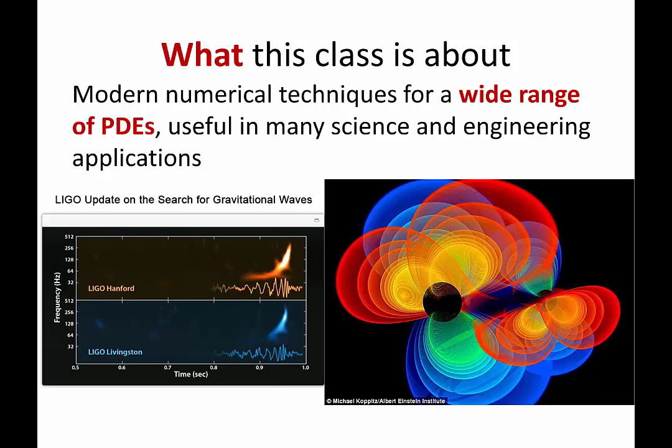This is amazing to me because when people were simulating this, they didn't even know it actually existed — that was before the observation. In some sense, it was a prediction by purely physical, mathematical, and numerical deduction. And then last year, people actually detected a wave that corresponds exactly to the kind of signal that was predicted by the numerical solution of partial differential equations.